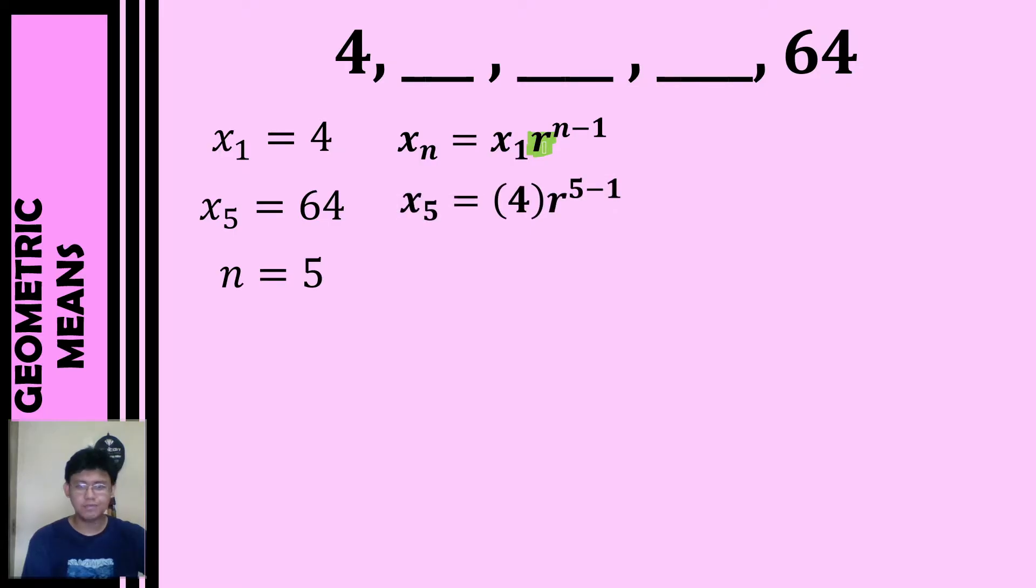So we have x sub 5 equals 4 times r raised to 5 minus 1. We will replace our last term by 64. So we have 64 equals 4 times r raised to 4. Take note that I already simplified our exponent.